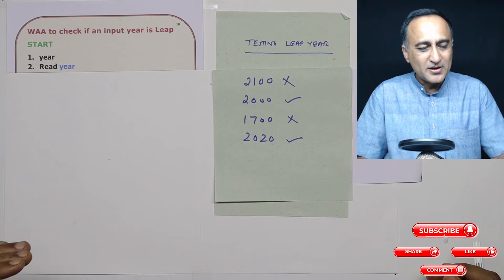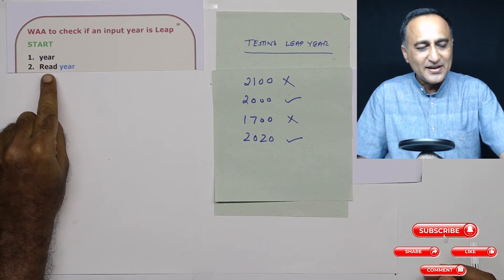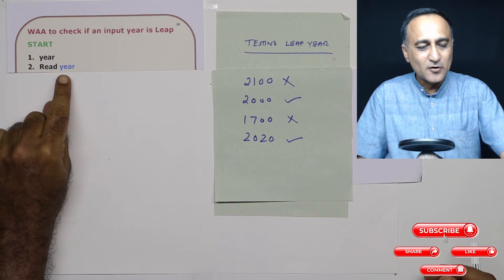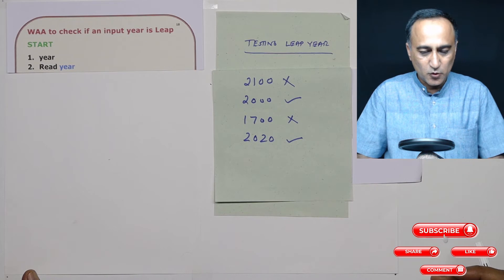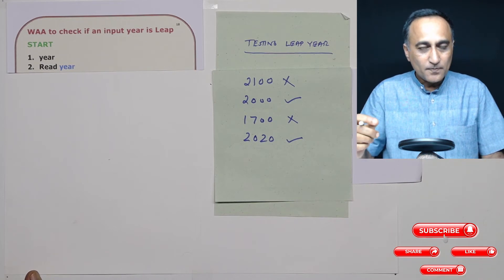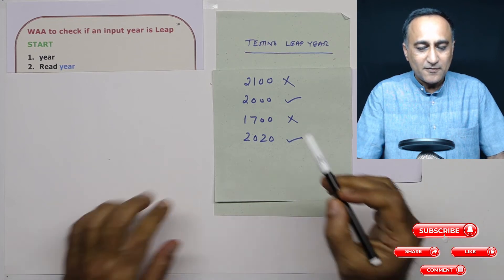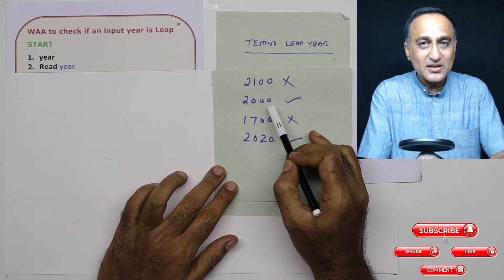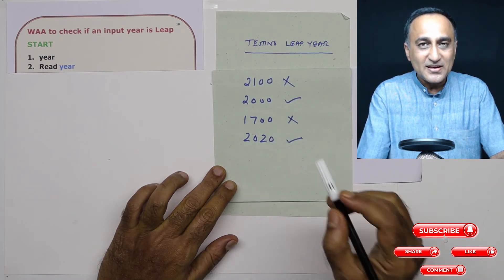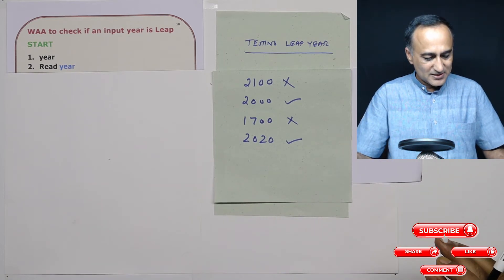To find if an input year is a leap year, I'll need a variable called year, then I need to read the year from the user — the user is going to enter the year from the keyboard. The sequence of steps in this algorithm is very important. First, if a year is given, I need to check whether it is divisible by 400. If a year is divisible by 400, I can straight away say the input year is a leap year.